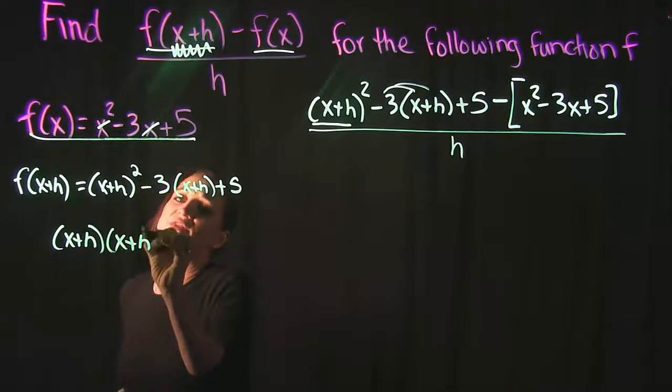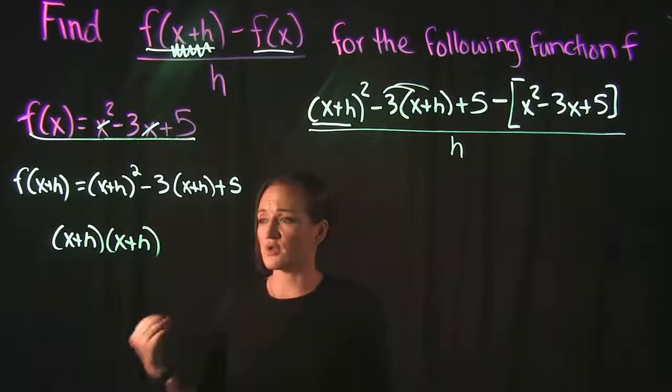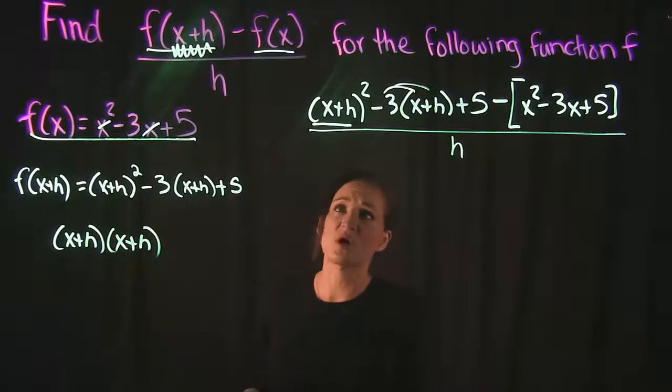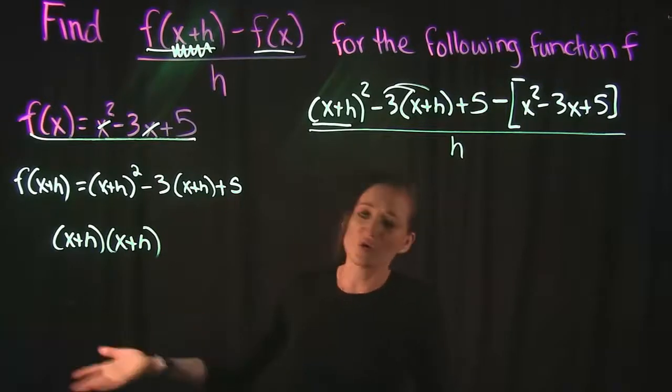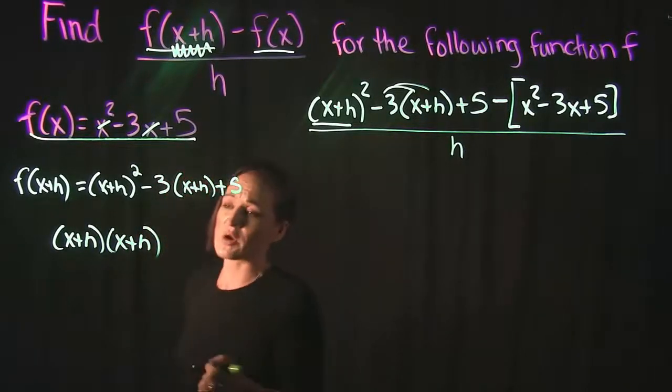(x+h) squared is just (x+h) times (x+h). So when we multiply this, there's a couple of different ways you can multiply it. You can foil it, you can use the formula for squaring a binomial, you can just distribute it. I like to use the formula and square it in my head.